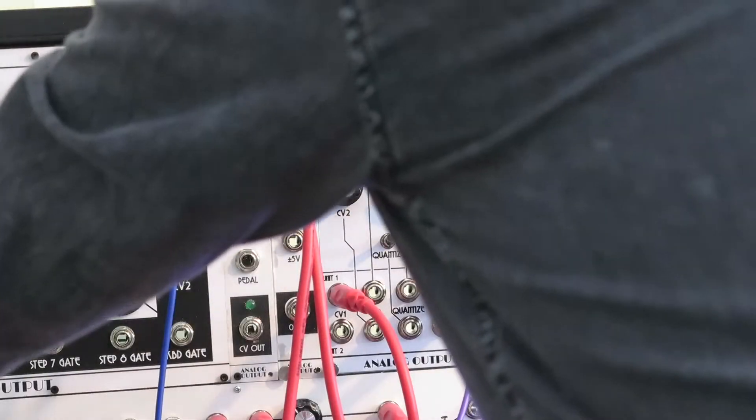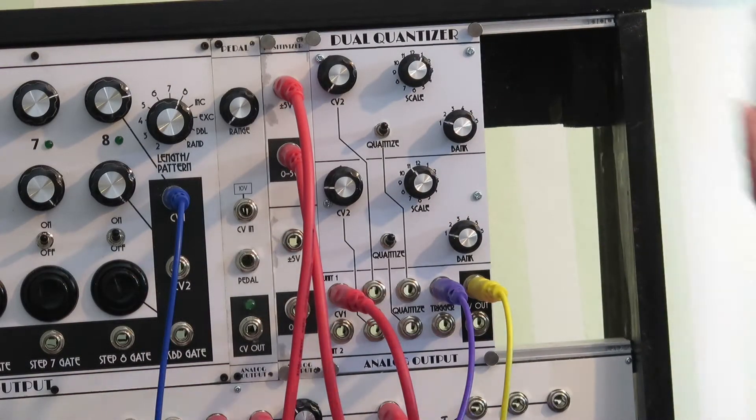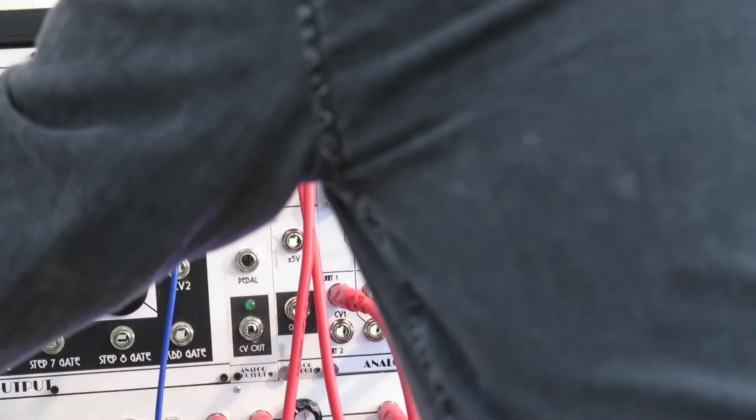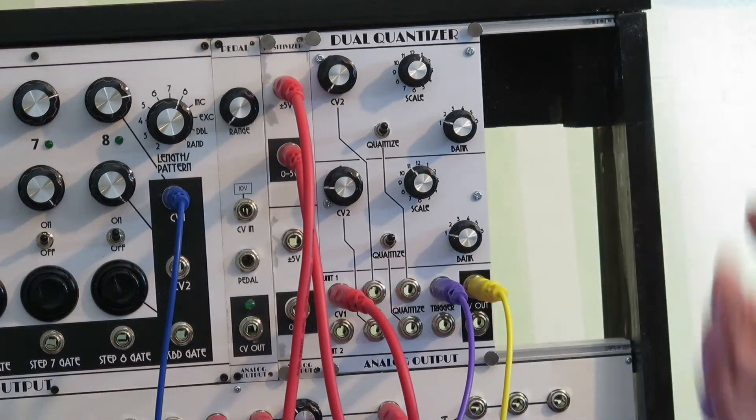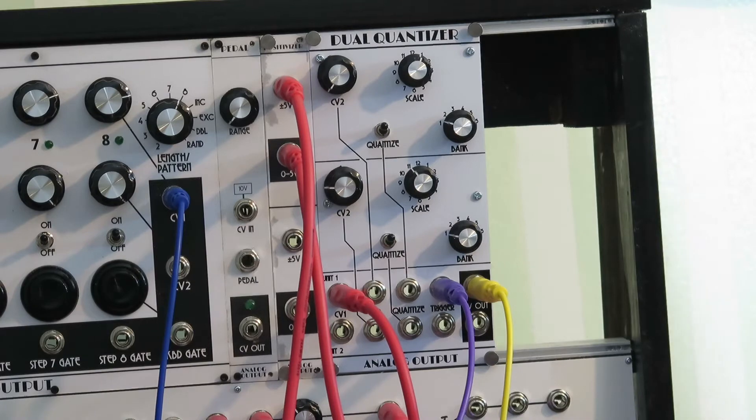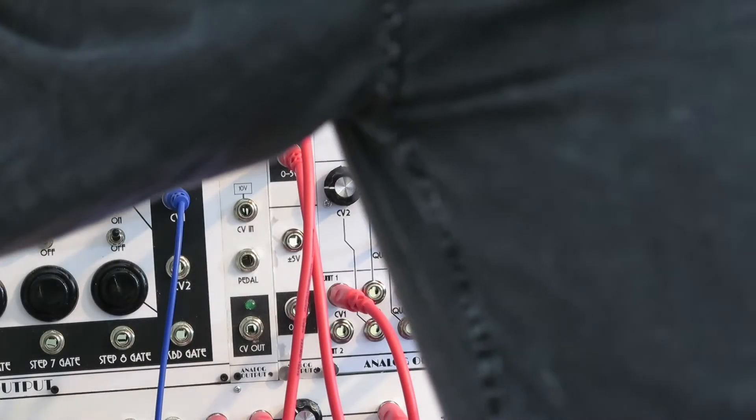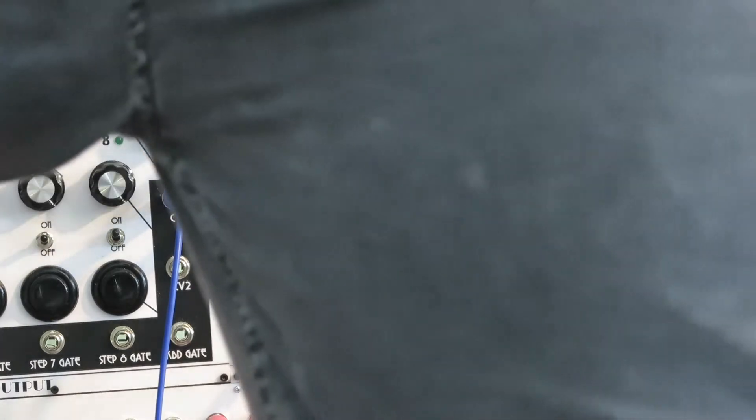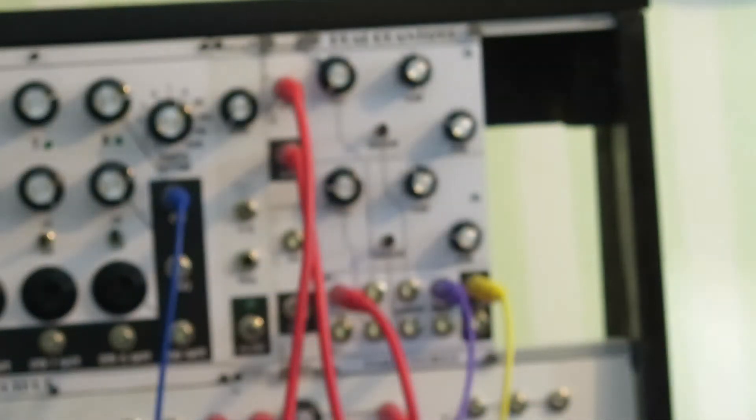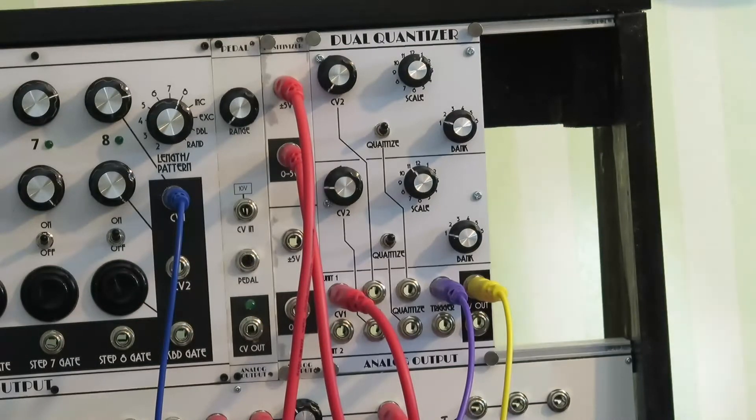If I feed it a trigger, it samples the input and then holds that. So this is a sample and hold, but it's a quantized sample and hold. It's quantizing the results to that scale. So we can turn on a clock here, and we get random notes from the equally tempered scale.